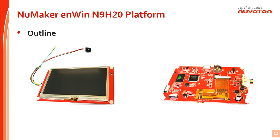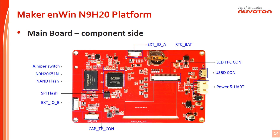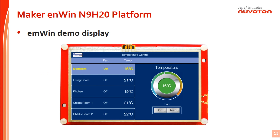Now I would like to introduce the new Nuvoton HMI N9H20 demo board platform. The picture shows the demo board outline. This design has a two-layer PCB with one component side in the back of the PCB. The platform is installed with one 4.3" LCD embedding a four-wire resistive type touch panel. Based on the HMI N9H20 demo board system architecture, the external I/O includes USB connectors, external I/O connectors, LCD connectors, UART ports, and SPI NAND flash for booting option. From the PCB component side picture, we can see the key parts combination clearly. The NAND flash and SPI NOR flash are Winbond flash products. We can see the GUI display with emWin on the HMI N9H20 demo board platform.